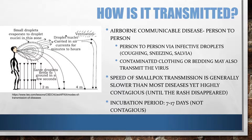Smallpox also spreads most readily during the cool dry winter months due to everyone staying inside and having close contact. The speed of transmission is generally slower than most diseases yet is highly contagious. The incubation period is about 7 to 17 days, during which the infected person is not contagious. A person with smallpox is only contagious when the rash breaks out until the rash disappears.